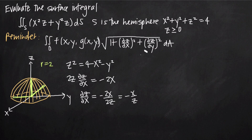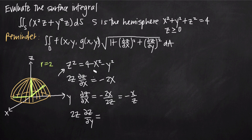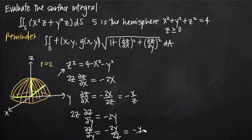Similarly, for the partial derivative of z with respect to y, we treat z as a function, y as the variable, and x as a constant. Using implicit differentiation again, we get 2z times partial z partial y equals negative 2y. Dividing both sides by 2z, we get partial z partial y equals negative y over z.